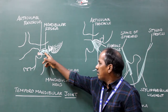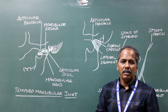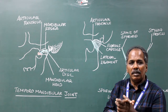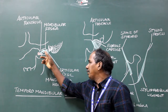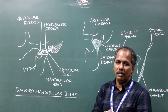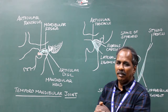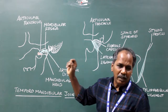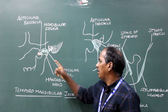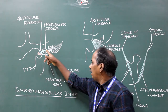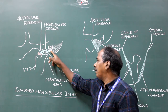The articular surfaces are separated by an articular disc. So, the joint cavity of the temporomandibular joint is divided into upper meniscotemporal compartment and lower meniscomandibular compartment. The articular disc is a fibrocartilaginous structure. The parts of the articular disc are: anterior extension, anterior thick band, intermediate zone, posterior thick band, and posterior bilaminar zone.